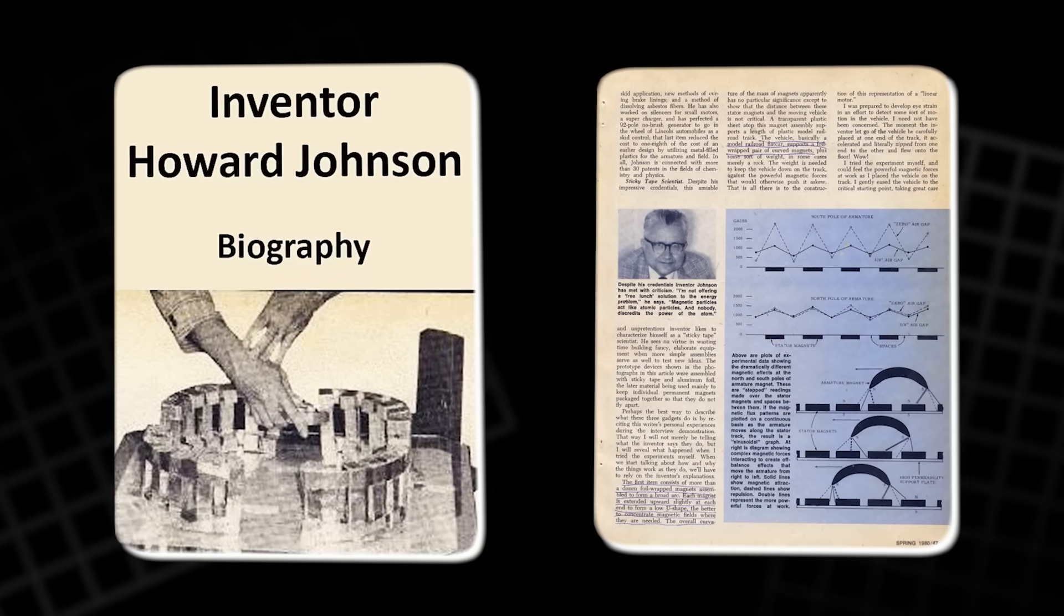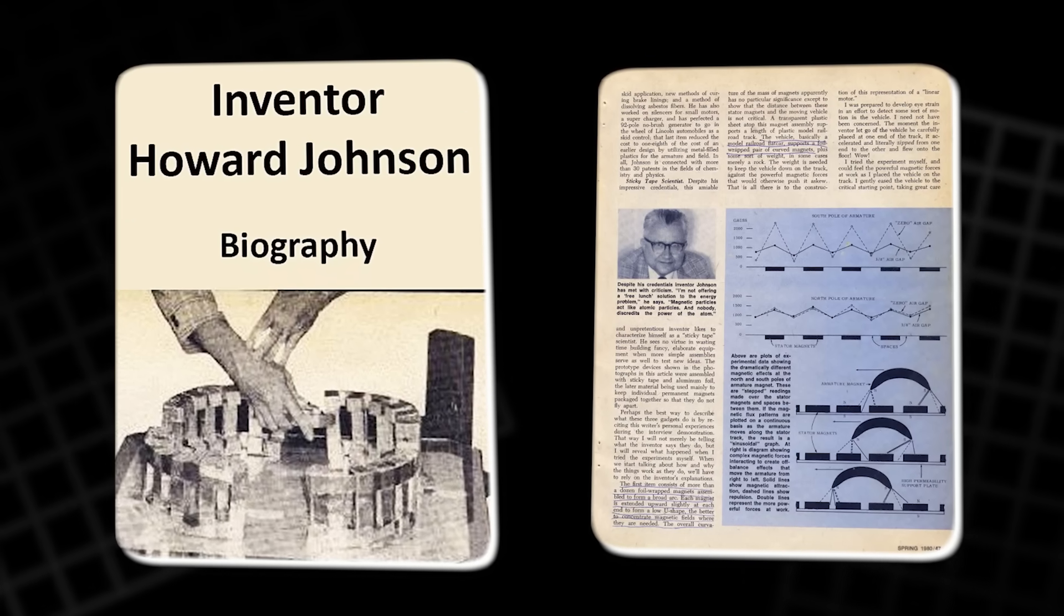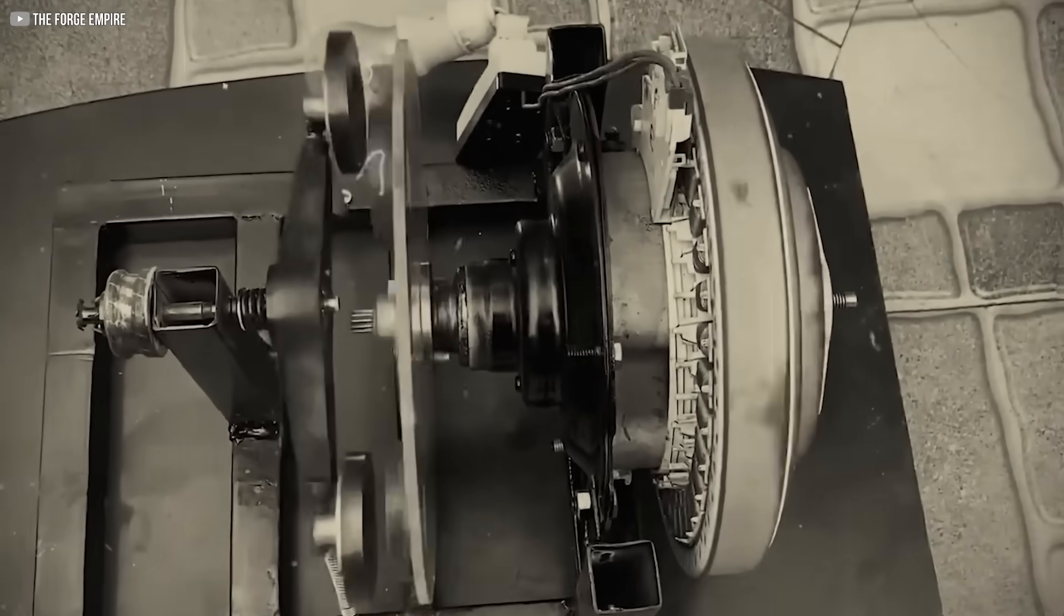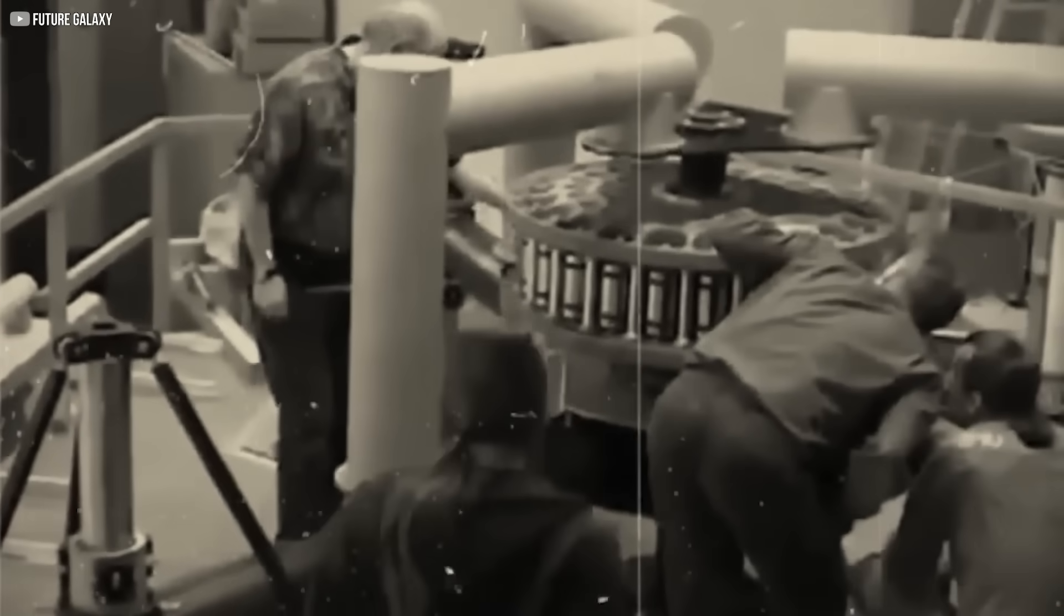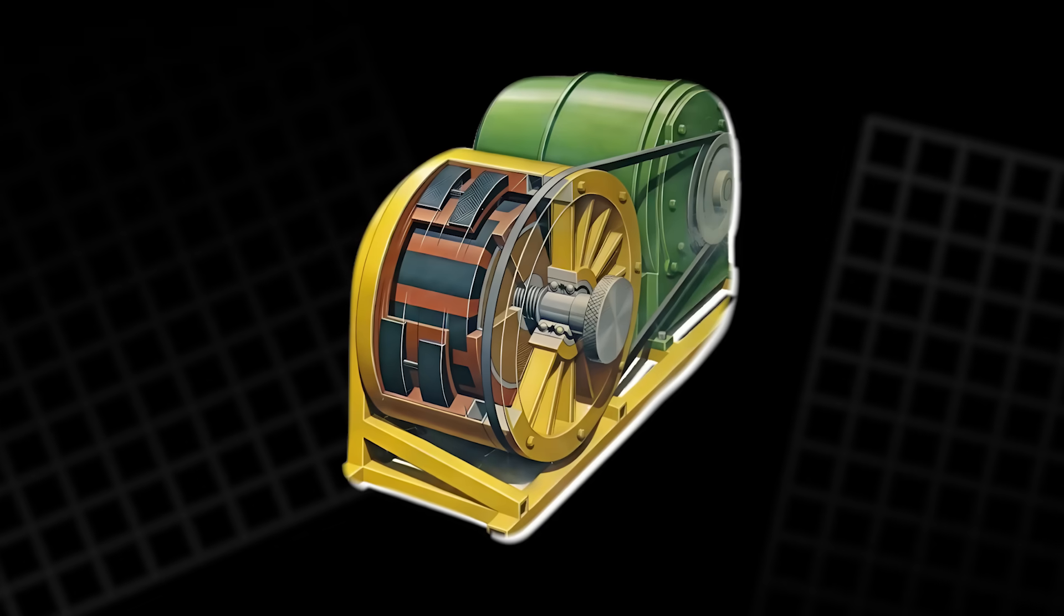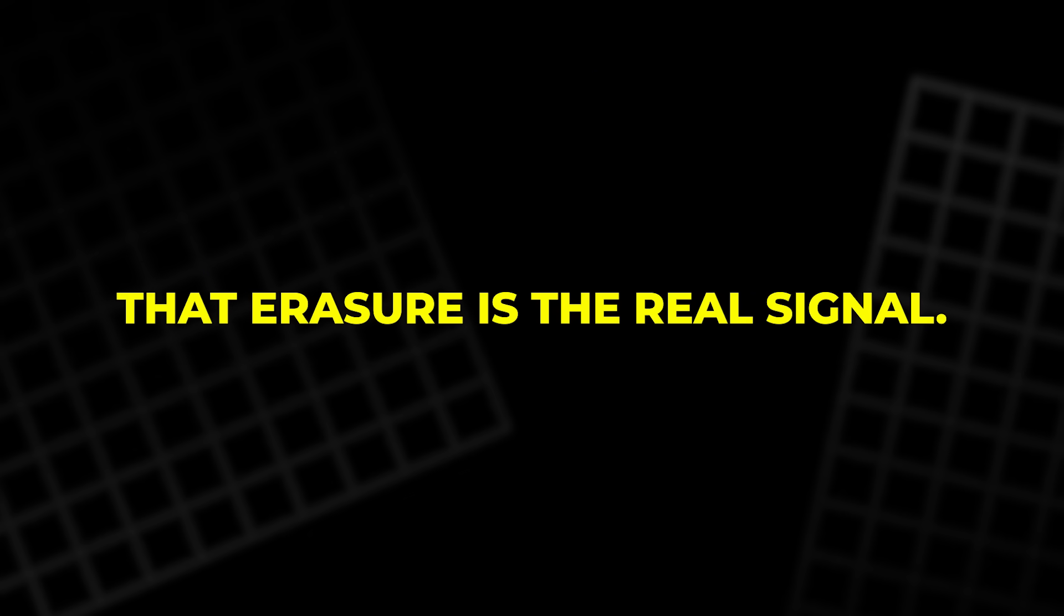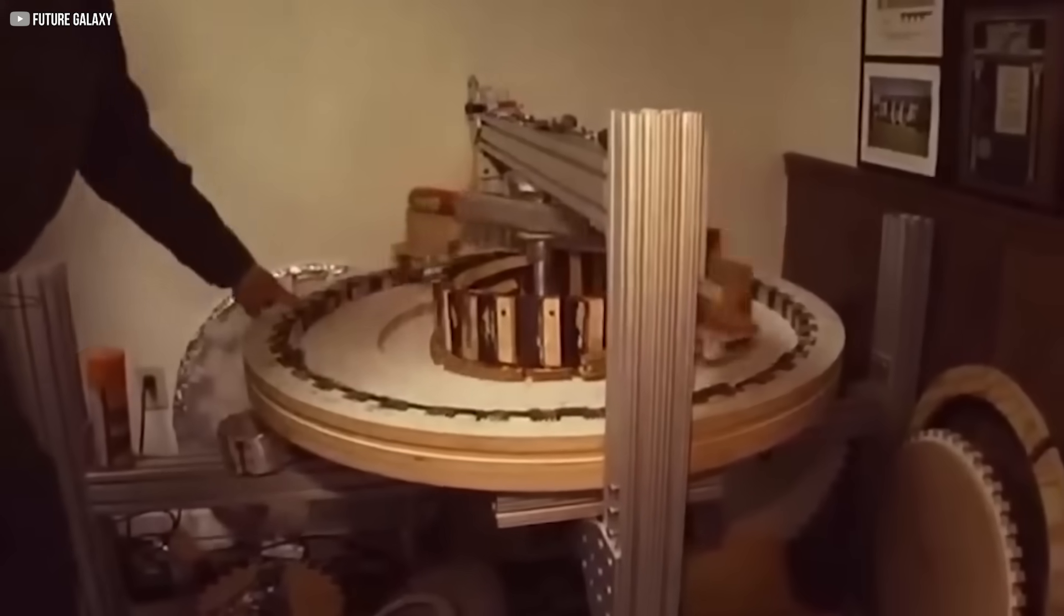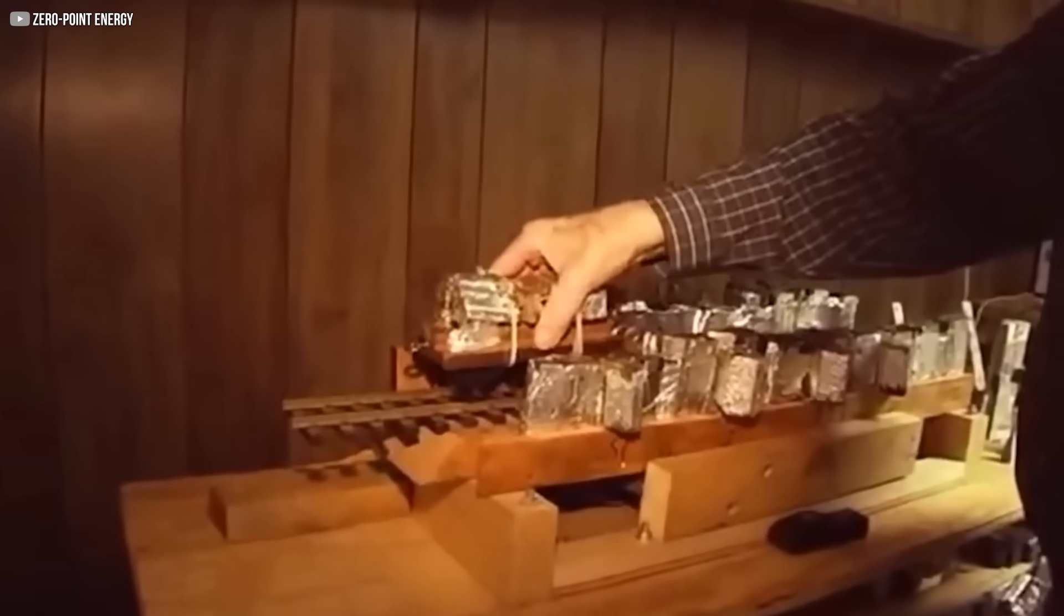Johnson's case is unique because he documented everything. He left behind blueprints, patents, and testimonies. And the resistance to his work wasn't based on testing or peer review. It was fear-driven obstruction. If his machine had been a scam, it would have faded quietly. Instead, it was erased loudly. That erasure is the real signal. They weren't afraid it would fail. They were afraid it would work. And that's why it's resurfacing now.